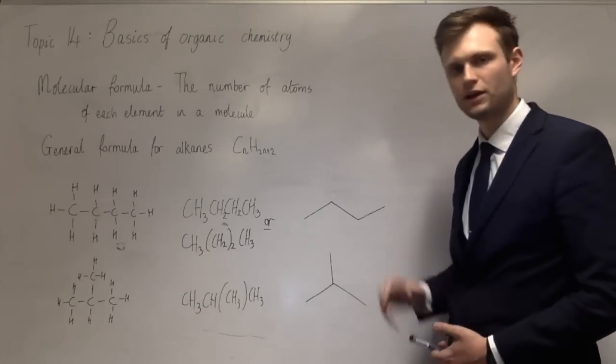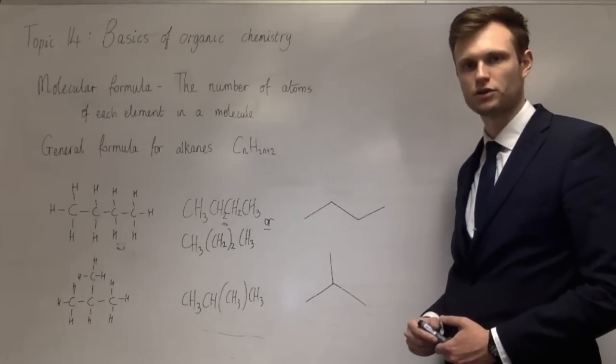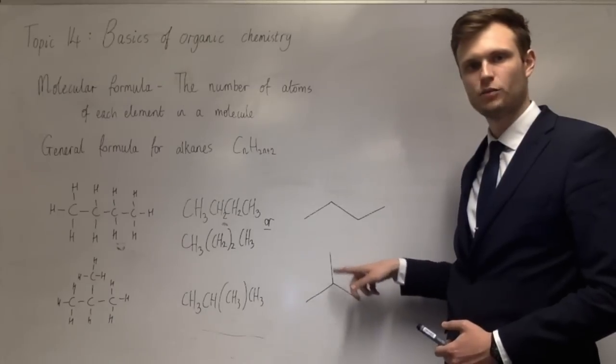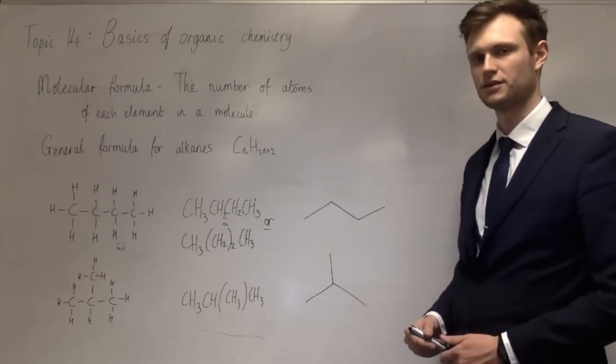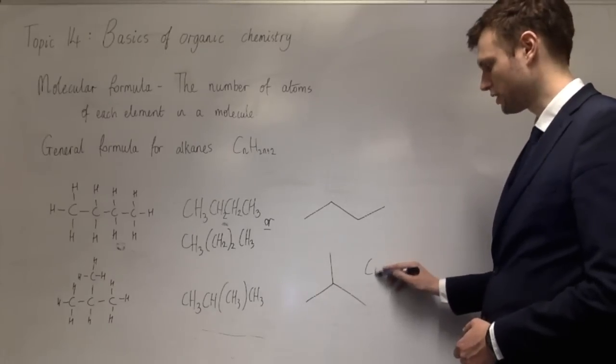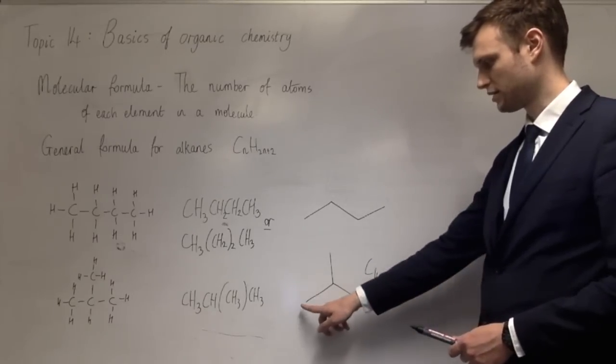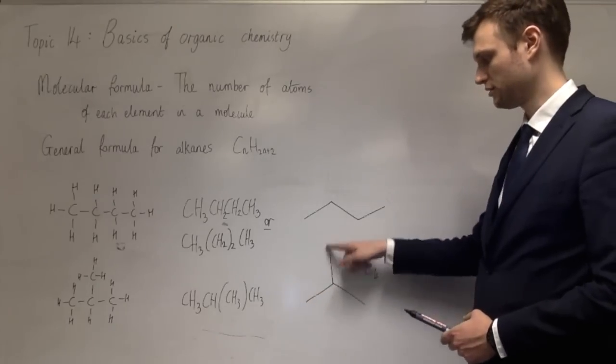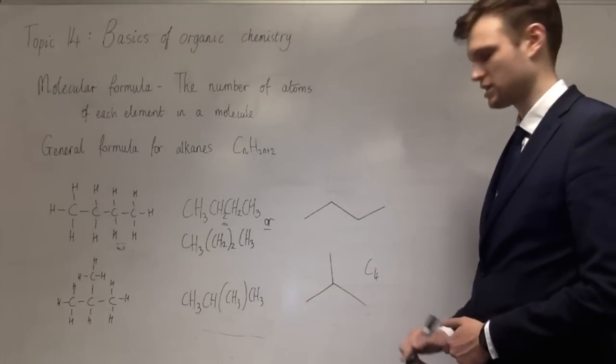When they're drawn like this, people often get confused and you can't work out how many hydrogens or carbons are in that molecule. Just remember, any corner or any place where lines meet is a carbon, and any end is a carbon. So there's three ends and one where they meet, so that's four carbons. If it's an end, it's three hydrogens, it's a CH3. Three, six, nine, and then one there is ten.